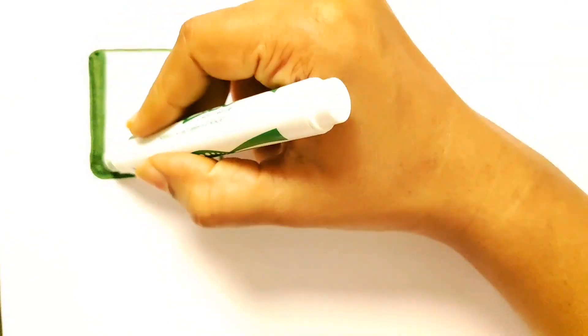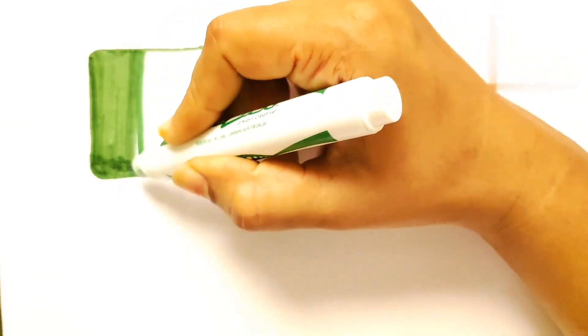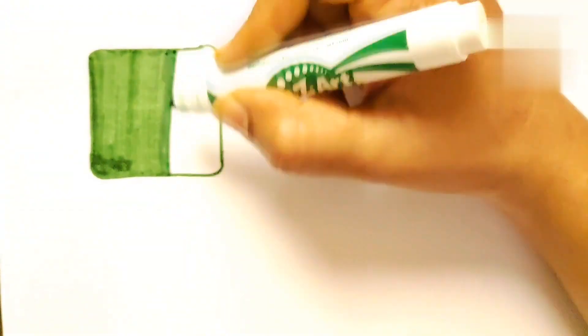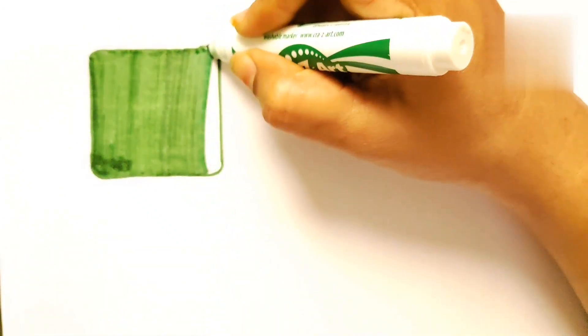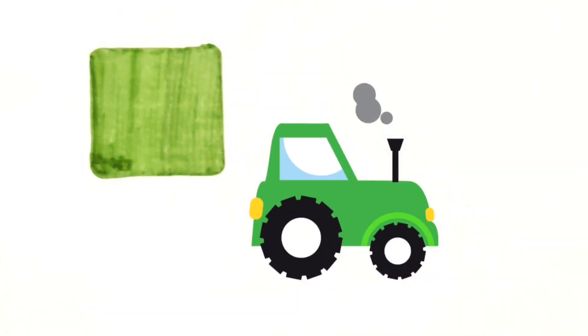Now let's paint it. Wow, I like green color. Do you also like green color? Now our green color square is ready. Green color tractor is here.